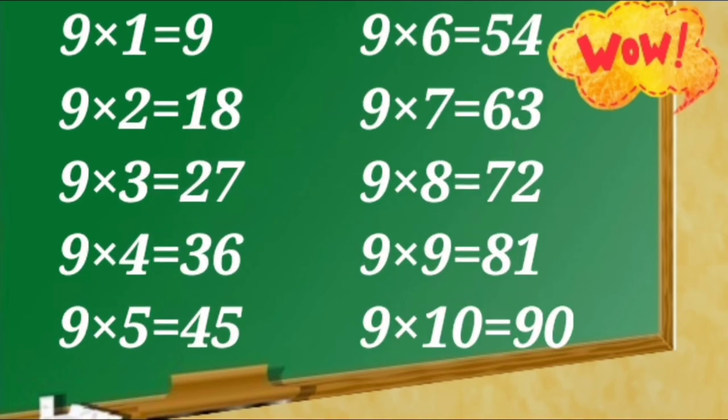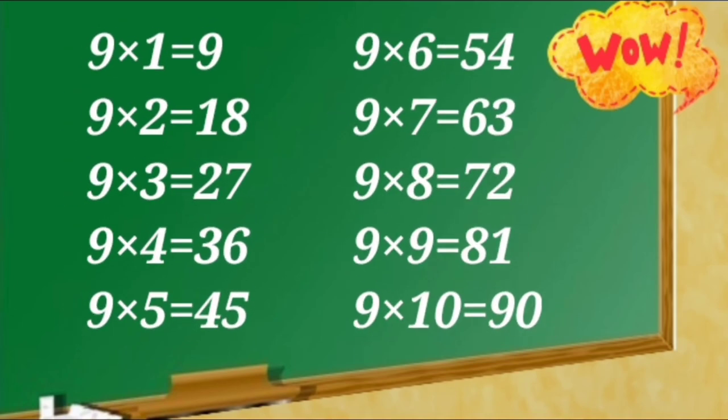9 ones are 9, 9 twos are 18, 9 threes are 27, 9 fours are 36, 9 fives are 45, 9 sixes are 54, 9 sevens are 63, 9 eights are 72, 9 nines are 81, 9 tens are 90.